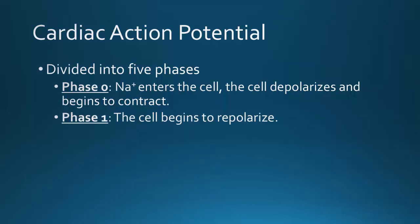Phase one: the cell begins to repolarize. Phase zero is your depolarization or action potential, and from phase one to phase four you start seeing the return to resting potential. During phase one, inward sodium channels close and the cell begins to repolarize. Negatively charged chloride ions enter the cell and outward potassium channels open briefly. A little potassium continues to leak out to maintain a charge just long enough for calcium to come in.